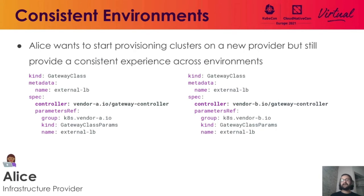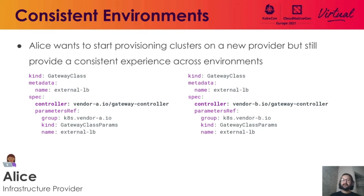Next, imagine that Alice is provisioning clusters in new environments where you have to use a different vendor in each environment. In one cluster, the implementation from vendor A is being used, while in the other cluster, a Gateway API implementation from vendor B is being used. Even though these are two different environments, Alice wishes to provide a consistent and seamless experience across them — and she can do that using Gateway API. Hopefully this gives you a feel of how the API looks and how it's designed.